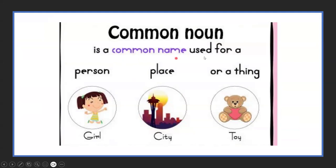Common noun is a common name used for a person, but not a specific name. I can say girl, but I didn't say the name of this girl. Like city — I didn't say the name of this city. Or things — toy — I didn't say the name of this toy. So girl is a common name, but Seja is a proper name. City is a common name, but Khartoum is a proper noun.